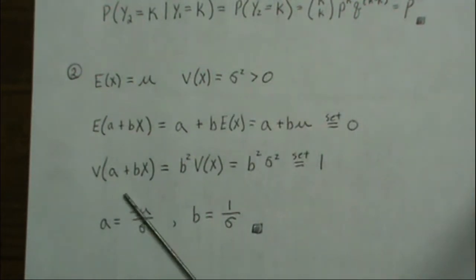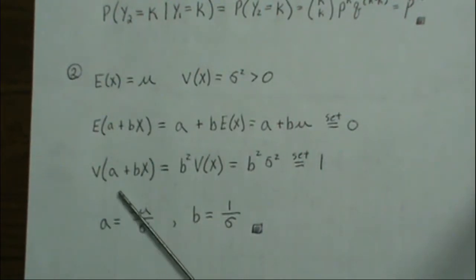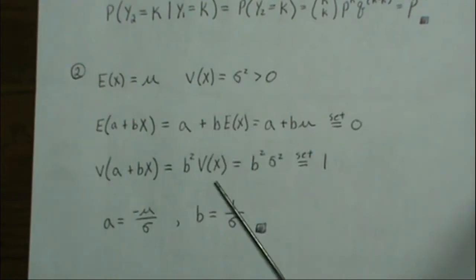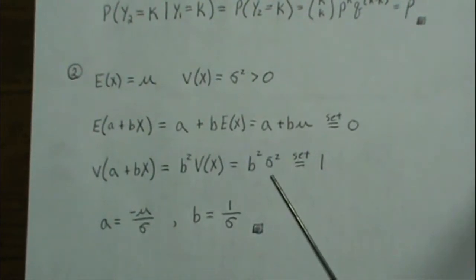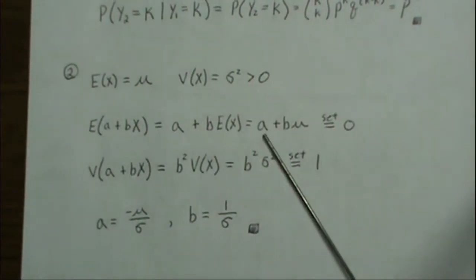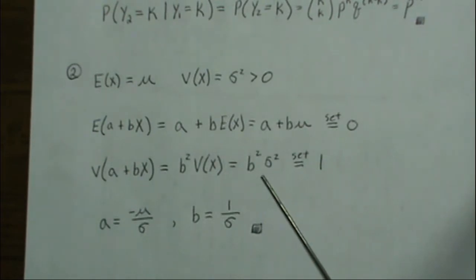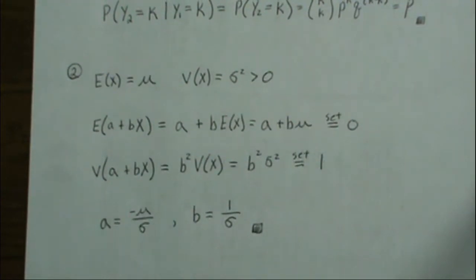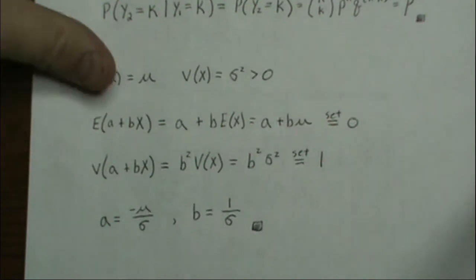Then we look at the variance of A plus BX. Since A is a constant, it doesn't affect the variance. So we look at the variance of BX, but B comes out squared, giving B squared sigma squared. We have two equations, two unknowns: A and B. Solving, B is equal to one over sigma. Plugging that in, A is equal to negative mu over sigma.